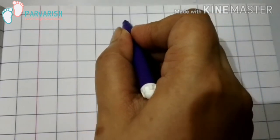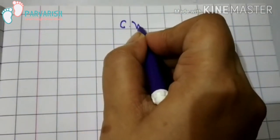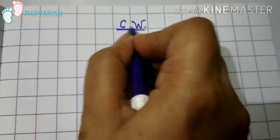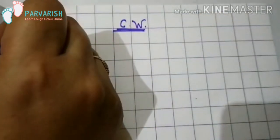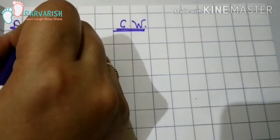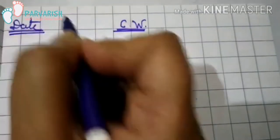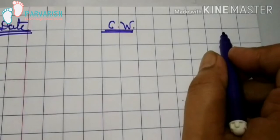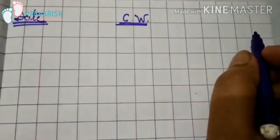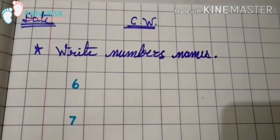Today's class is Math written work. In Math written work, I'm going to teach you number names 6 to 10. In the last video, we learned 1 to 5 number names. In today's class, we will learn 6 to 10 number names.